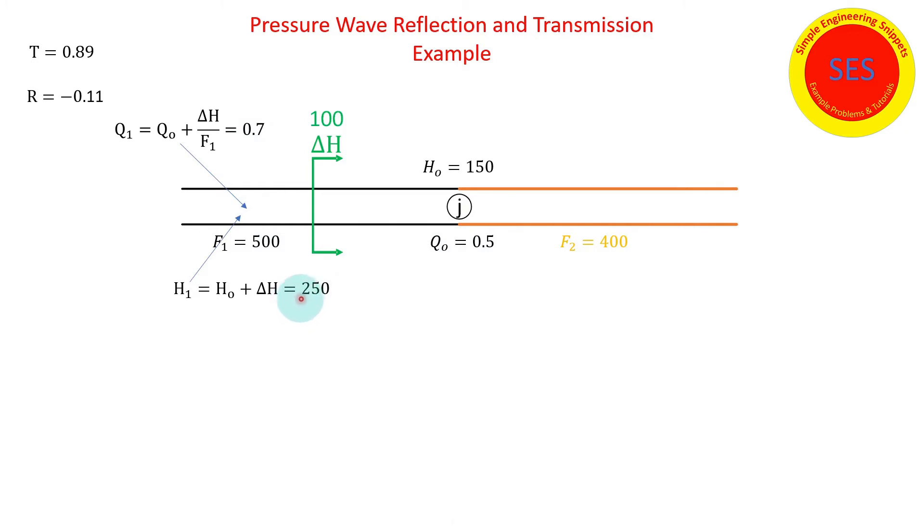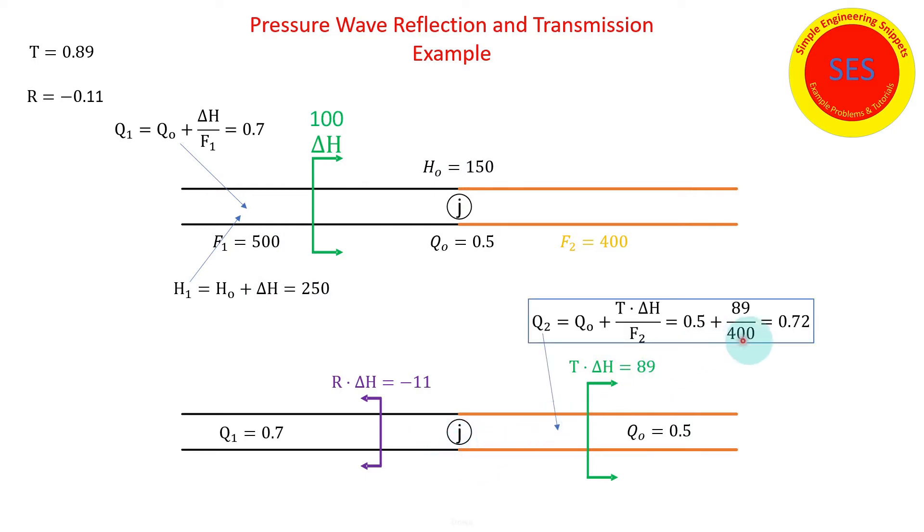And the head as expected changed from 150 plus 100 equals 250. Now the question is what is the head and flow after the wave interactions. We get the flow changed to 0.72, that's in each pipe surrounding the junction, and the head surrounding the junction in each pipe is 239, consistent with our transformation and reflection factors.